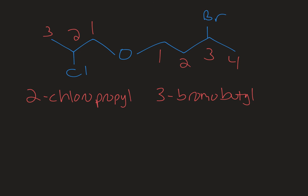Then the locant for where it is on that substituent. This would go in alphabetical order, so the 3-bromo would come first. So the common name would be 3-bromobutyl 2-chloropropyl ether. That would be the common name for this molecule.